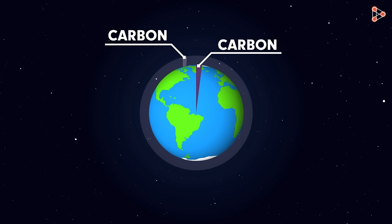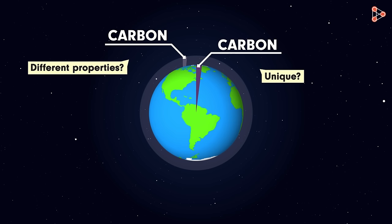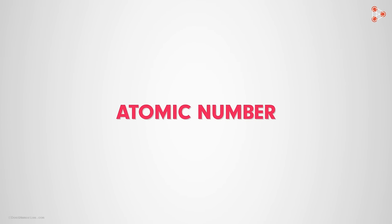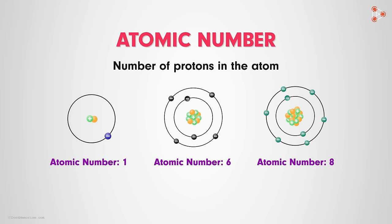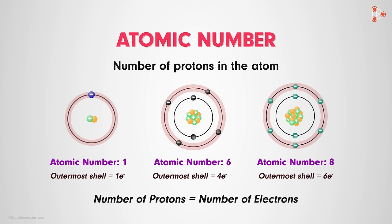But have you ever wondered what makes carbon so unique? What gives carbon the capability to have so many different properties? Can you tell me what the chemical properties of elements are based on? Yes, they are mainly based on the atomic number. The atomic number is the number of protons in the atom. And why is it so? Because the number of protons in an atom is equal to the number of electrons in it. And electrons — valence electrons to be precise — are the ones that participate in chemical reactions. So is the number of electrons in the outermost orbital our answer?